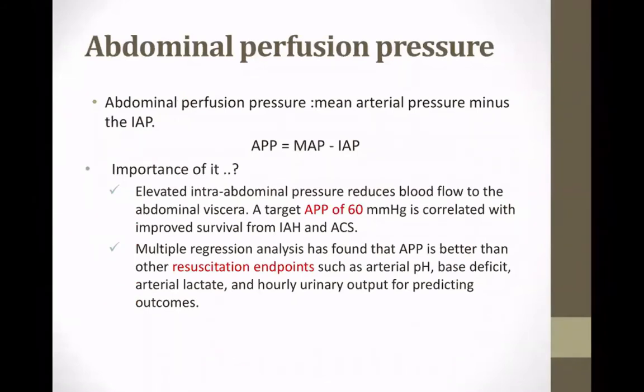Abdominal perfusion pressure is basically the MAP minus intra-abdominal pressure. A target of 60 is correlated with improved survival with ACS. Patients with abdominal compartment syndrome who are able to maintain an abdominal perfusion pressure of 60 or more have improved survival. It can also be used as a resuscitation endpoint — it has been proven to be better than lactate clearance, urine output, and even base deficit.